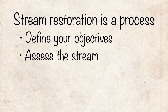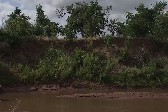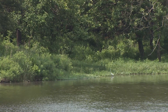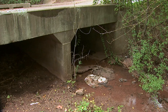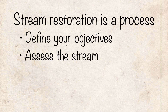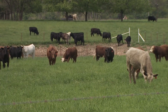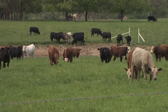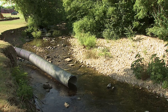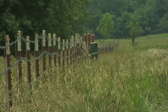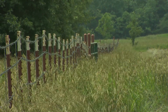Next, assess the stream. Take a close look at what's going on at that particular site. Is there down cutting or widening? Is the stream bank vegetation healthy and plentiful? Has something changed in the watershed upstream, or is something constricting the flow downstream? Once you've determined your objective and assessed the stream, you have to decide on your best course of action. In some cases, removing local stressors such as cattle grazing, stormwater pipes, or culverts, and replacing mowed turf grasses with native, deep-rooted plants may sufficiently improve the quality of the stream channel.